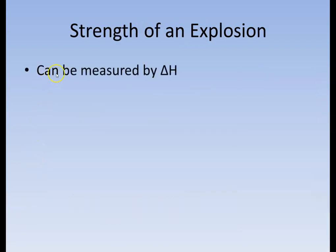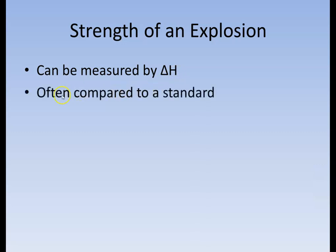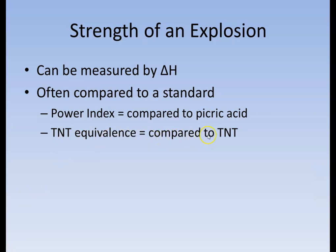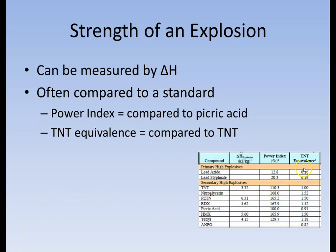Now let's talk about measuring the strength of an explosion. It can be measured by delta H — how many joules of energy are released per gram or per mole. But it's often compared to a standard. One standard is the power index, which compares explosive force to picric acid. Another is the TNT equivalent, which compares to the explosive firepower of TNT. For example, nitroglycerin is more explosive than the same amount of TNT. These standards allow us to see gram for gram how explosive and dangerous some of these chemicals are.